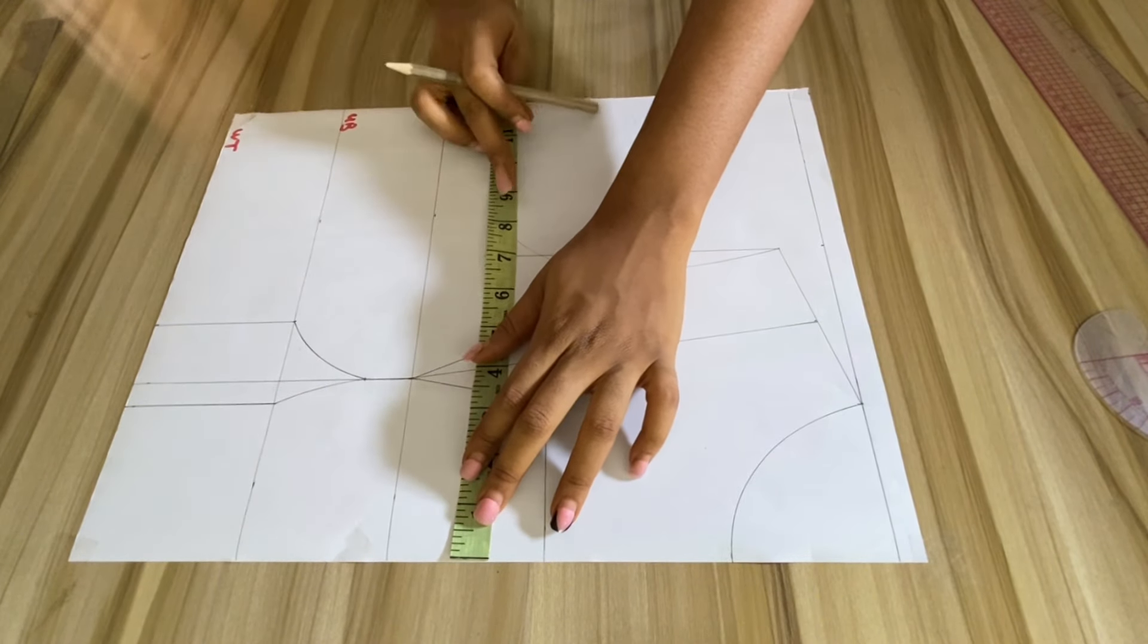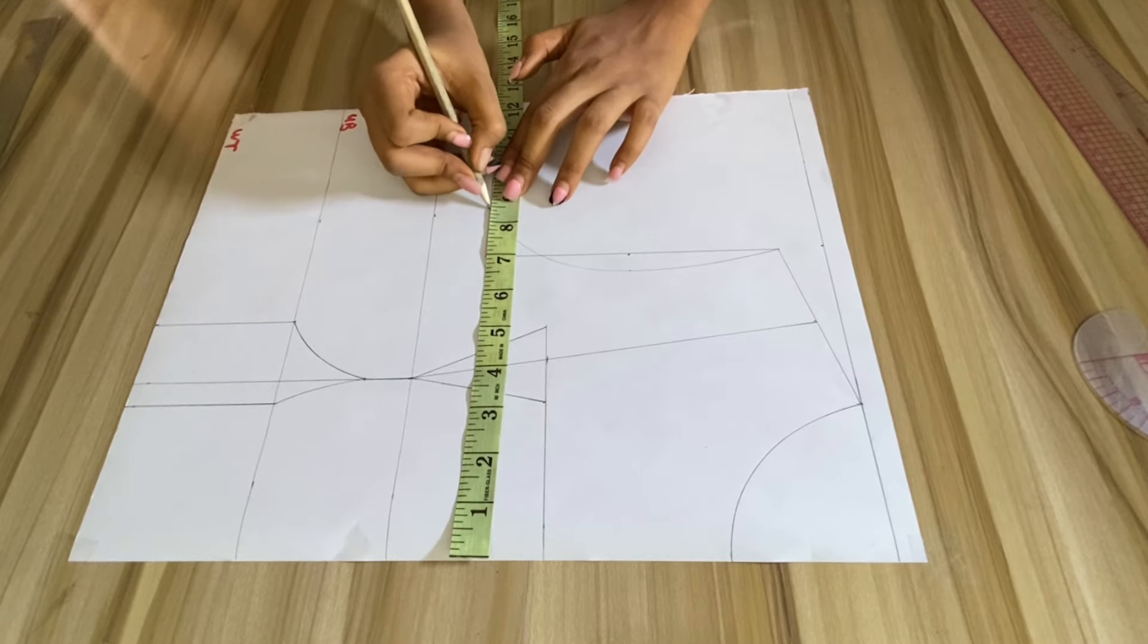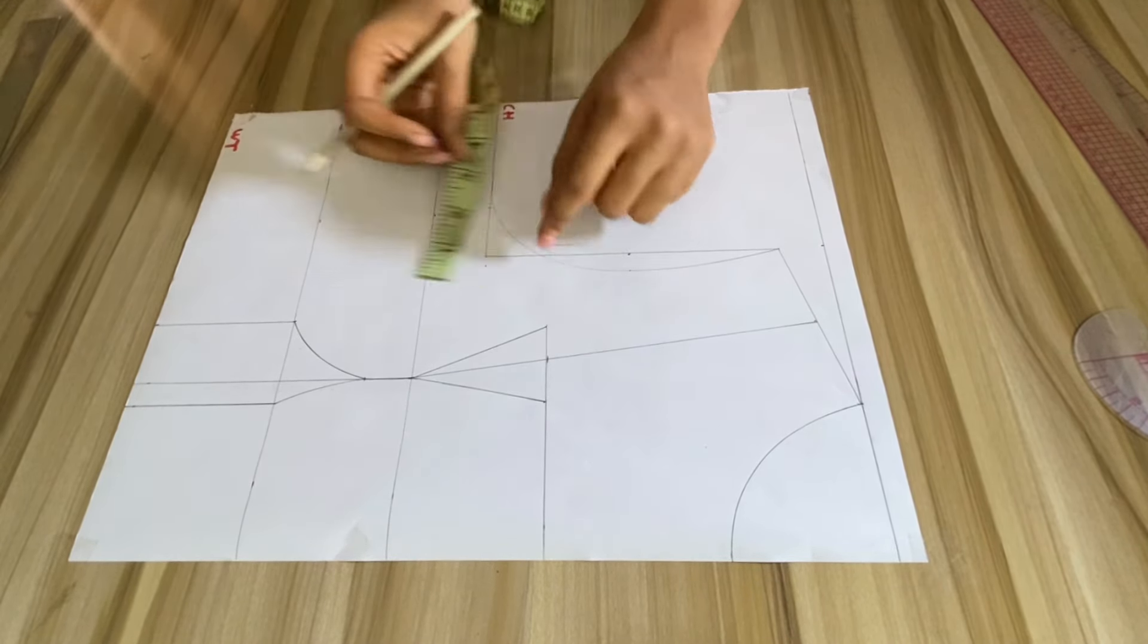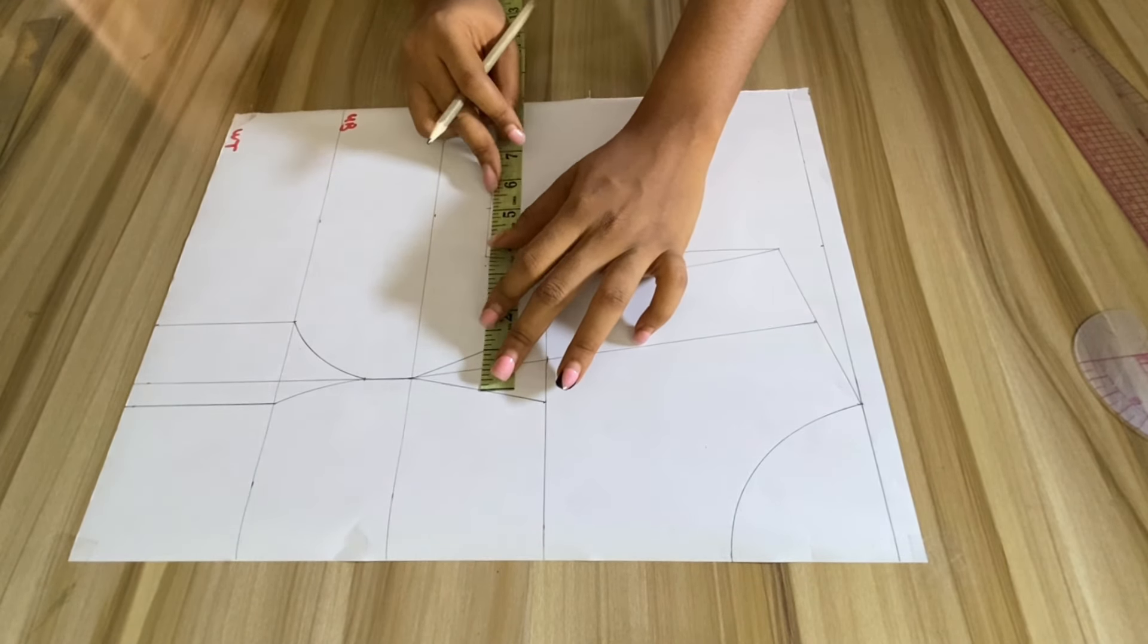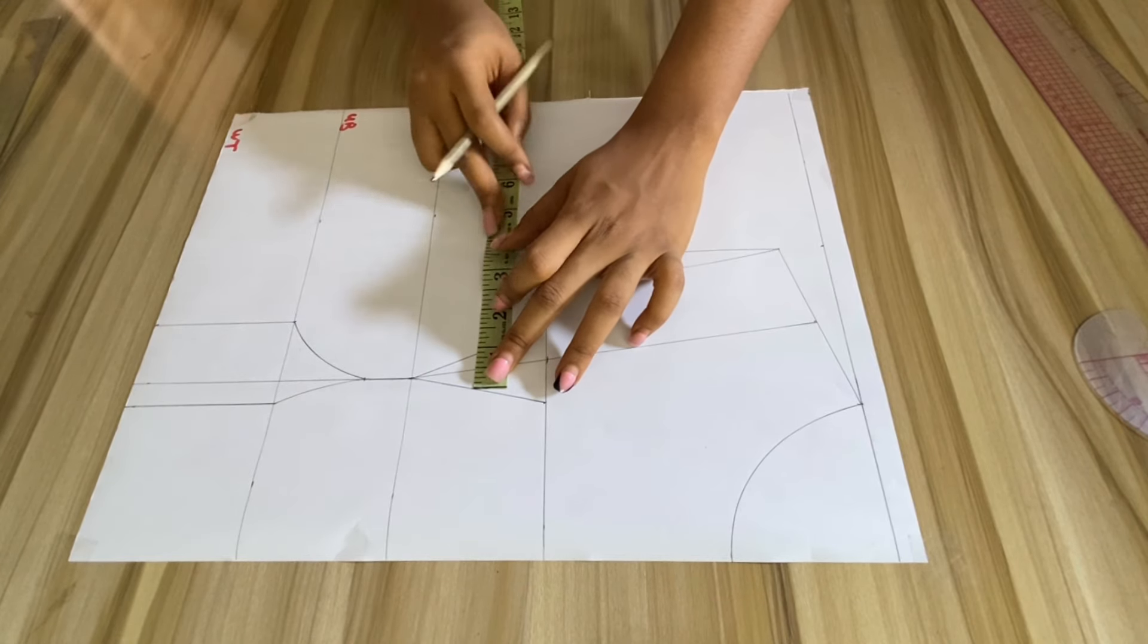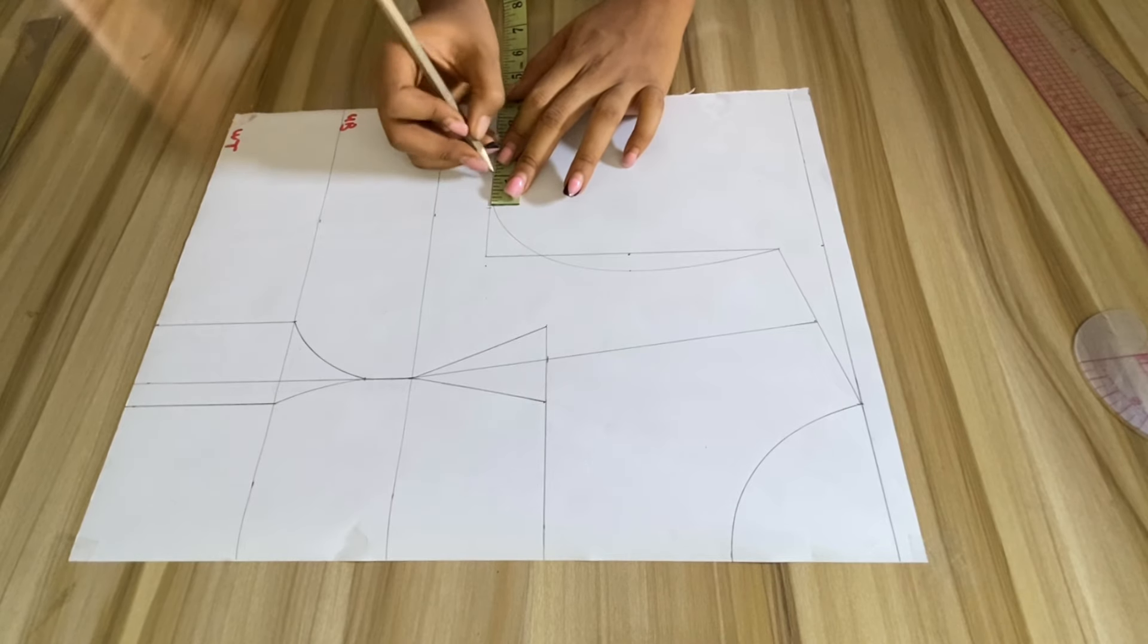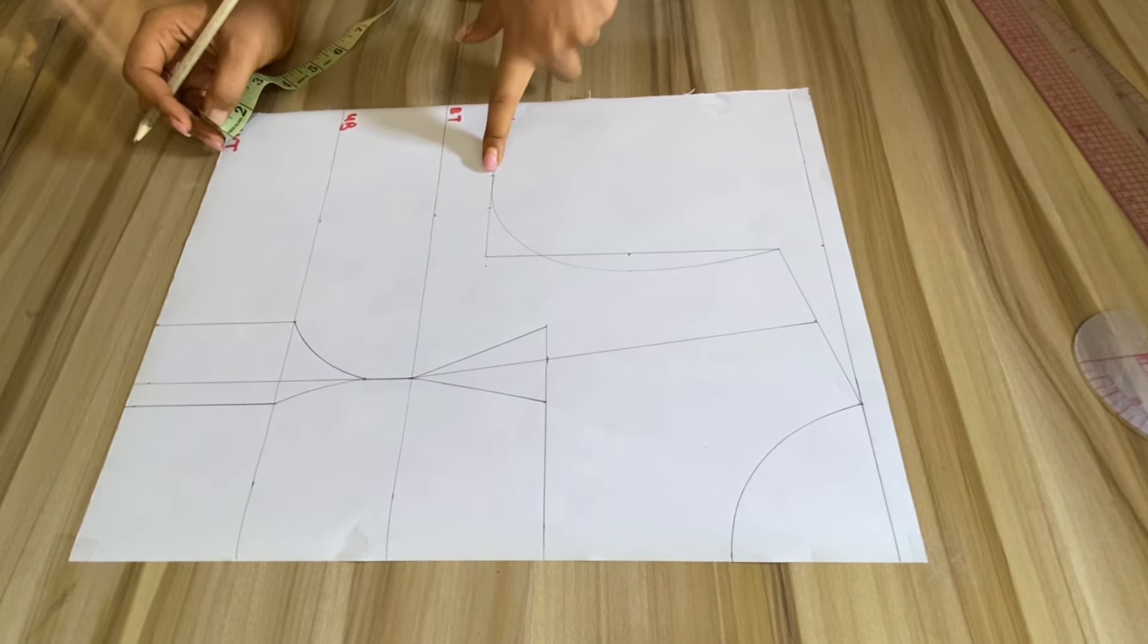Before doing that, I'm just going to be marking my bust measurement, which is 8.5 inches. I'm just going to be adding that measurement that was there, that intake we took, which is one inch. You need to add the darts back.